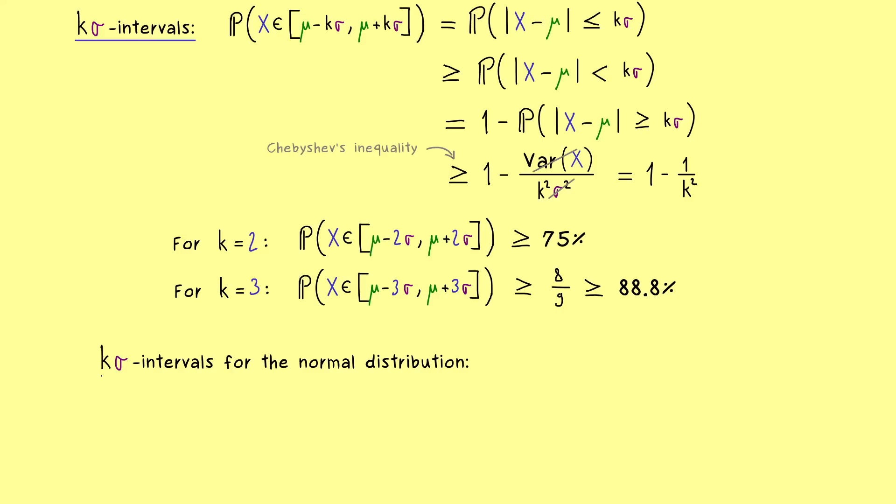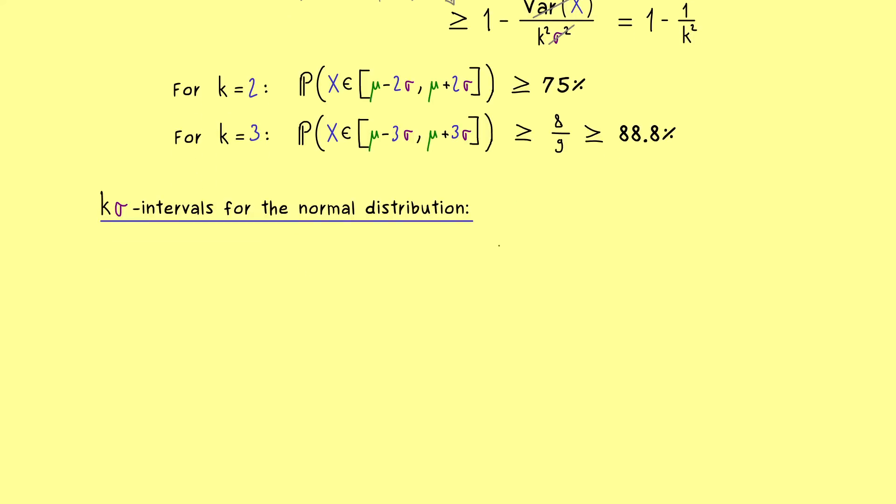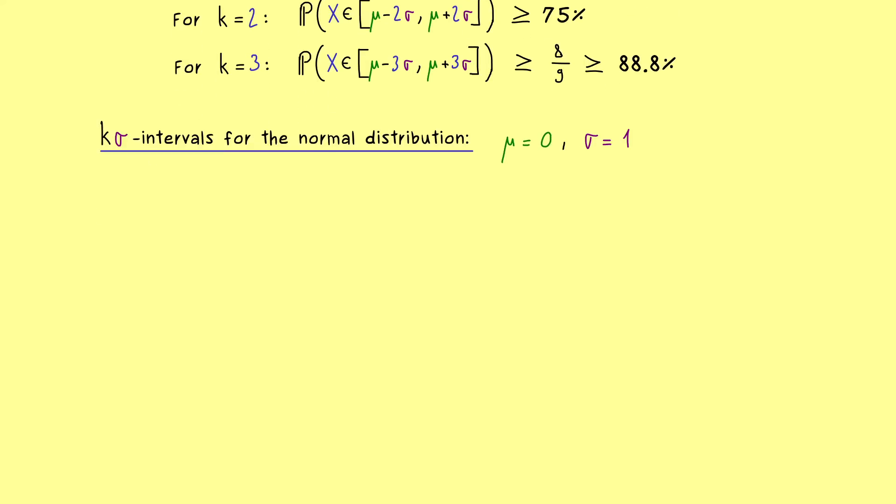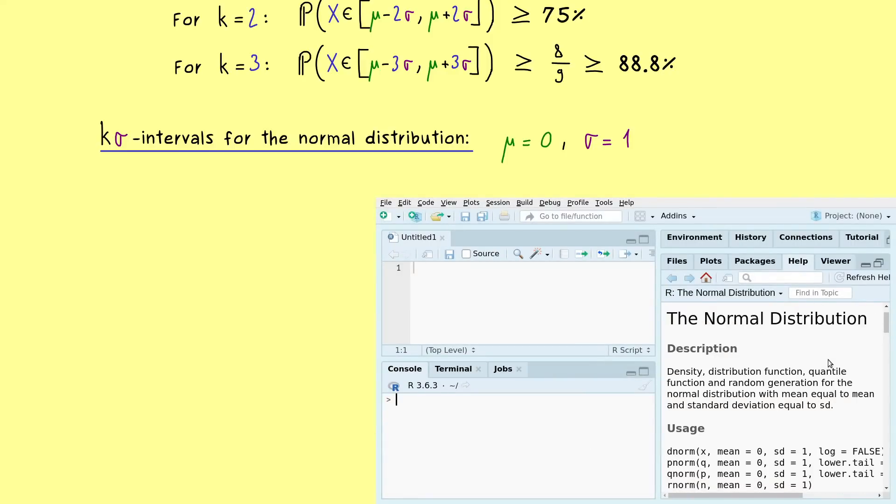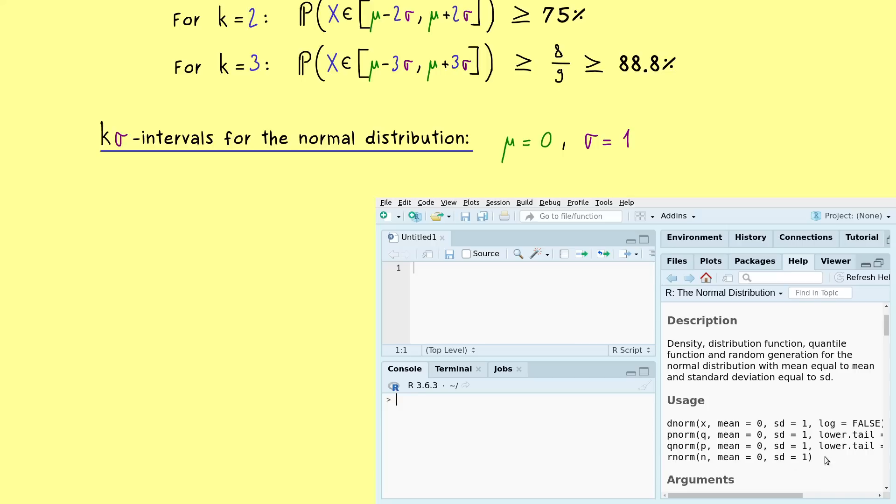Indeed, calculating the k-sigma intervals for the normal distribution is something one can do by considering the corresponding integrals. However, we can also find an estimate by simulating the normal distribution in R. For this, let's fix the standard one, where mu is equal to 0 and sigma equal to 1. And then, let's open our R Studio as we know it. Okay, there we can immediately go to the documentation, where we see that rnorm is exactly the command we need here.